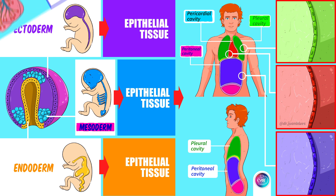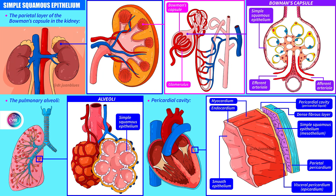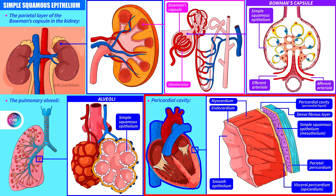If we look at the pericardial cavity in greater detail, here we have the heart. If we enlarge the image, we see part of the heart and the wall of the cavity that surrounds it. Observe how, covering the interior of the pericardial cavity, there is a single layer of flat cells — simple squamous epithelium — here in the cavity called mesothelium.